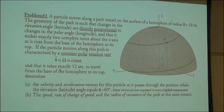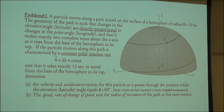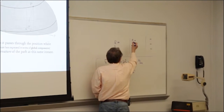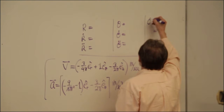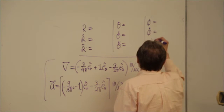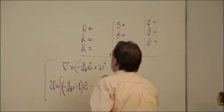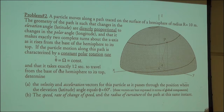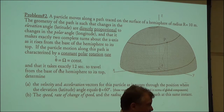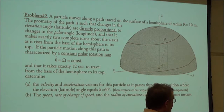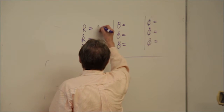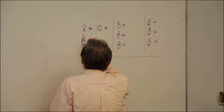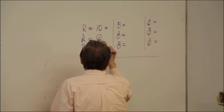A particle moves along a path on the outer surface of a hemisphere of radius 10 meters. This lends itself to global coordinate analysis. The global coordinates are capital R (the modular coordinate), theta (polar angle), and phi (elevation angle). Since the particle is always on the hemisphere surface, R equals 10 meters always, so R-dot and R-double-dot are both zero.